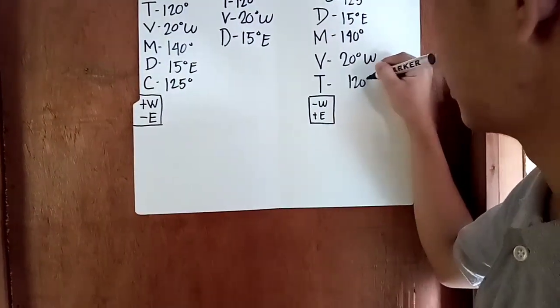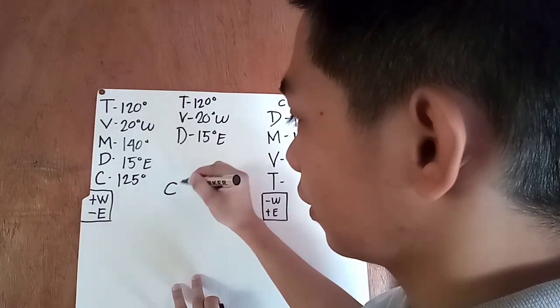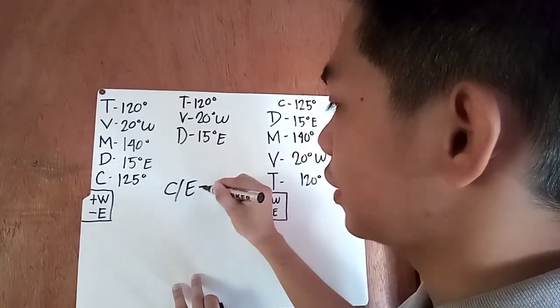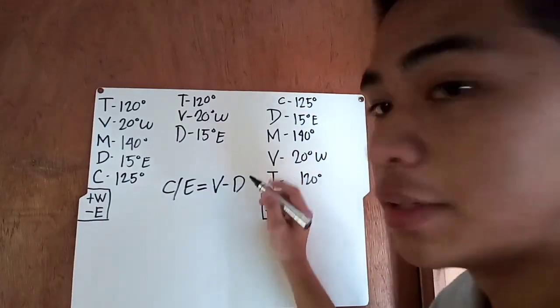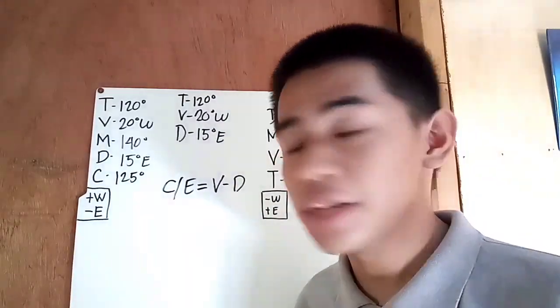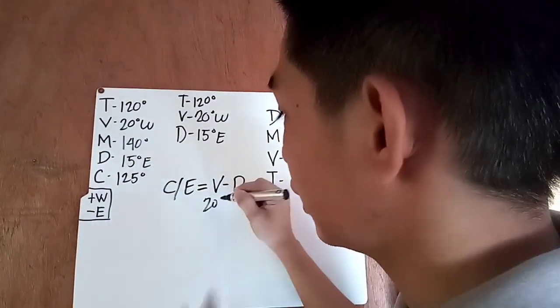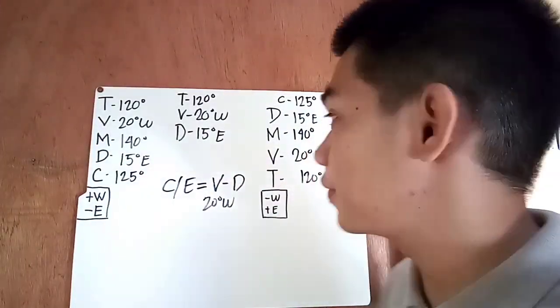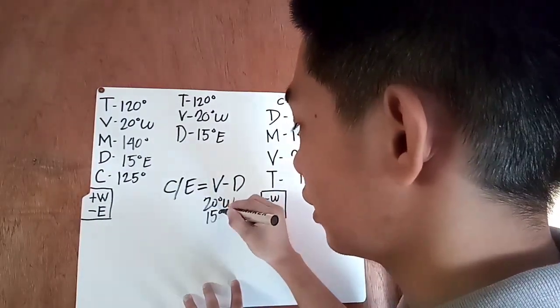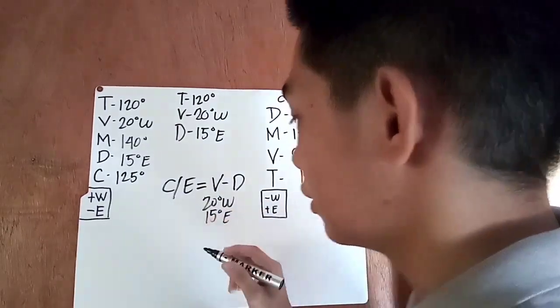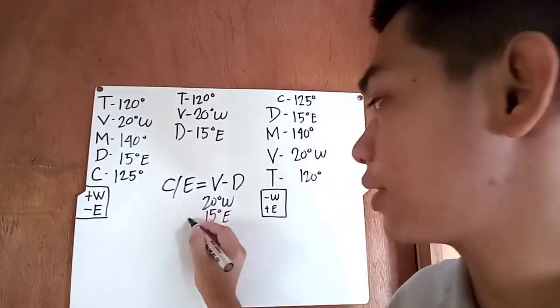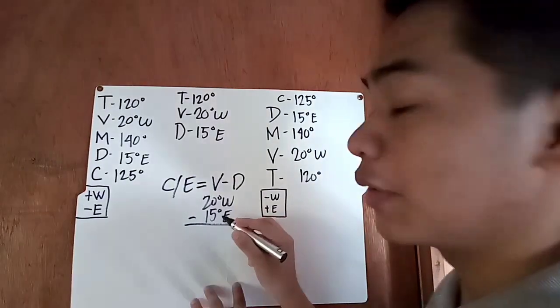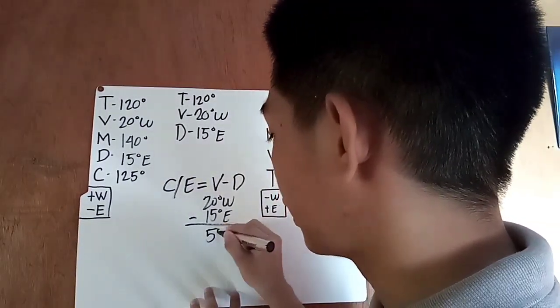The formula of getting the compass error is variation minus deviation. So the value of variation is 20 degrees westerly and the deviation is 15 degrees easterly. So we will just subtract it and get the difference. The difference is 5 degrees.